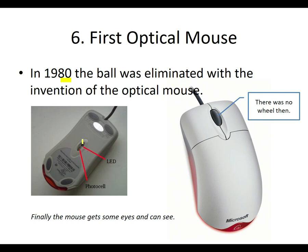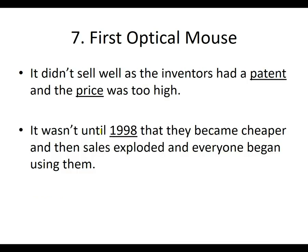Whoever invented it had a patent on the photo cell that read the mouse pad surface, and they wanted a lot of money for it, so optical mice were too expensive and people didn't buy them. Then in 1998 — exactly how long a patent lasts, 18 years — the patent ran out, they became cheaper, and sales exploded. Other manufacturers were able to produce them, driving prices down, and just like monitors, the more you make and sell, the cheaper they become.